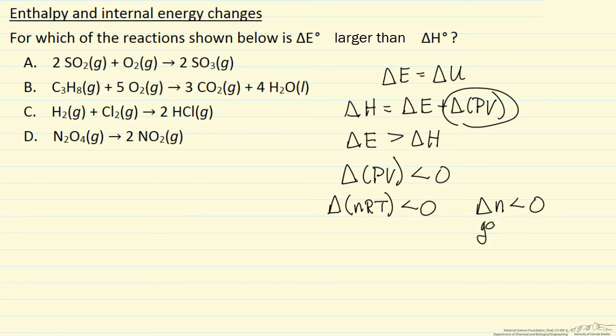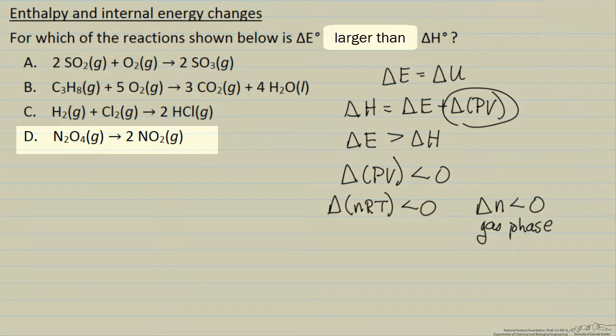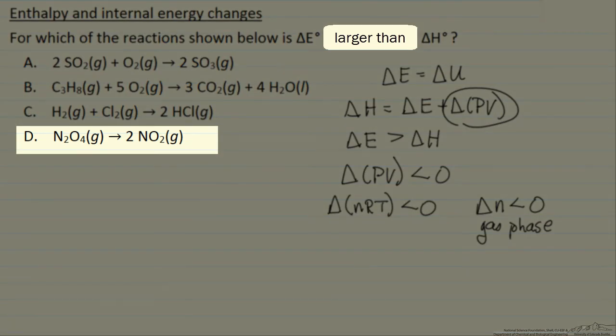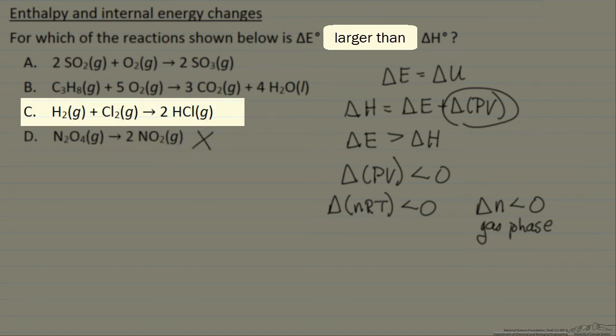Keep in mind this is delta N in the gas phase. Let's look at D, number of moles increases, so that's not one. For C, the number of moles is the same.